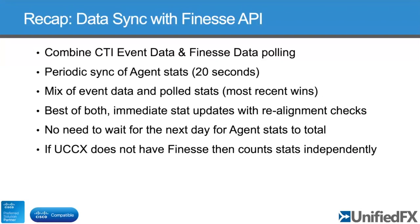What we did initially with 4.0 is a dual data feed — the existing CTI events feed plus a polling operation from the Finesse API. We combine data from both, and the most recent data entry wins, with a periodic synchronization every 20 seconds for agent stats. Effectively, you get the best of both worlds: immediate event notifications through CTI, but with automatic realignment from Finesse data if counters get out of sync — for example if our system or your system was offline for a while. So you get the benefit of both fast data and consistent data through that realignment.